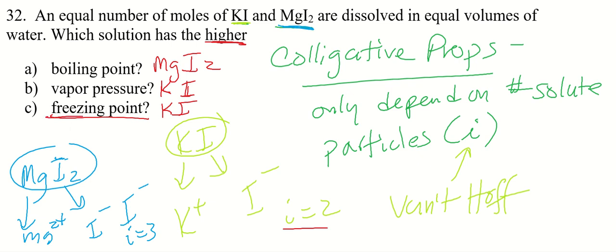Same thing with freezing point. Adding a solute doesn't raise the freezing point, it lowers it. Which one lowers it less? It's going to be lowered less if it dissolves into fewer solute particles, and that's going to be your potassium iodide.